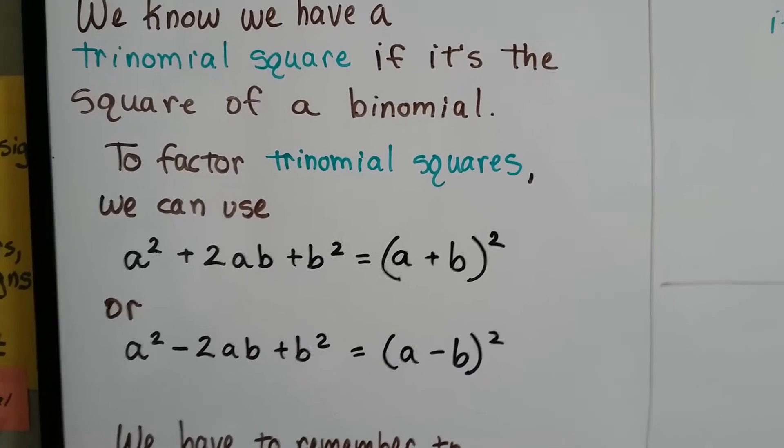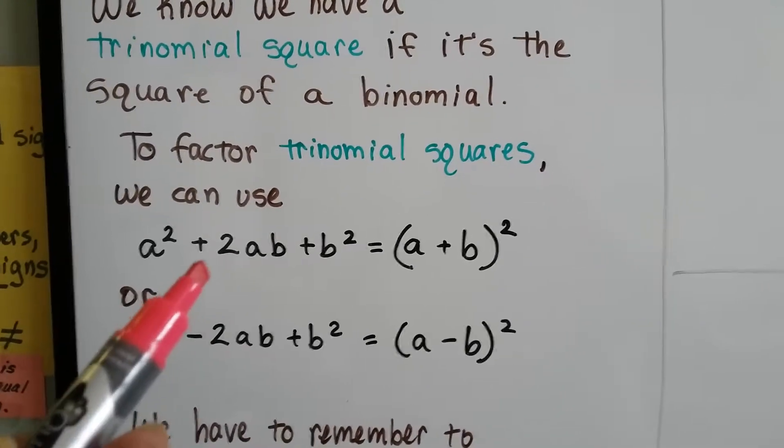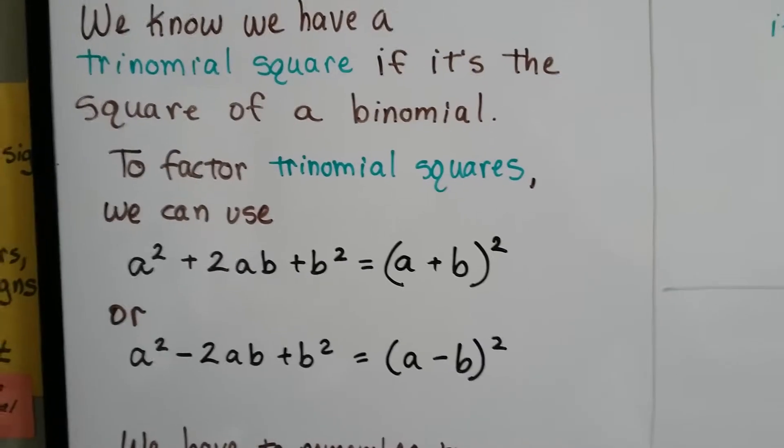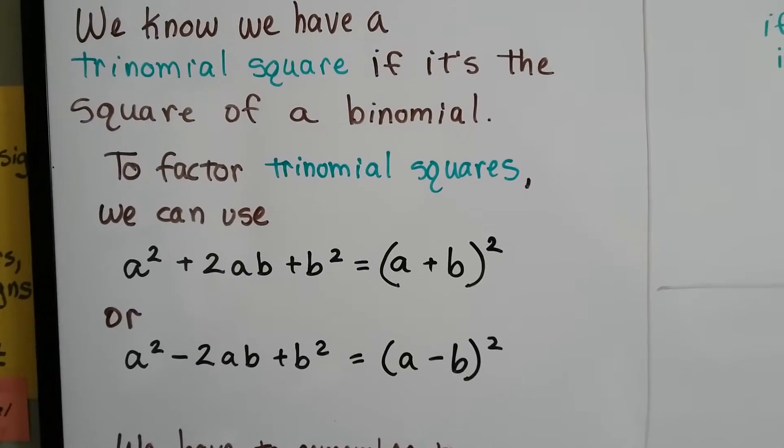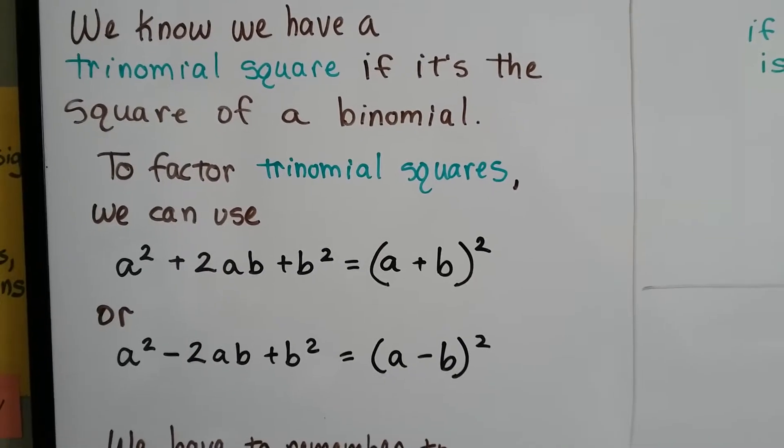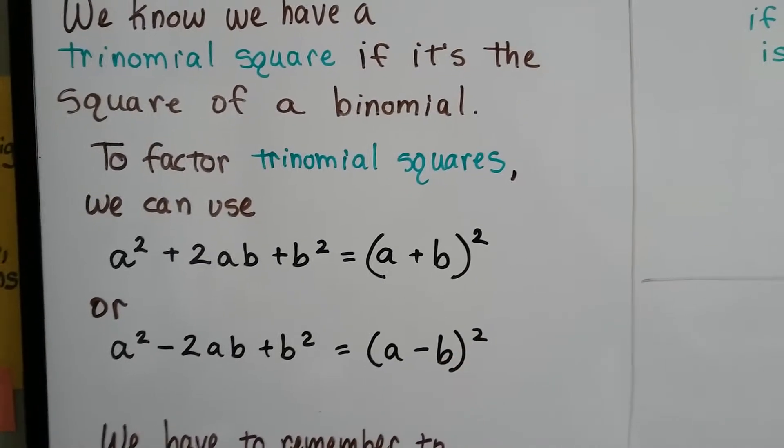Or, if there's a negative sign here, see, that one's positive, that one's negative. If we have a² - 2ab + b², then we're going to have the binomial (a - b)².